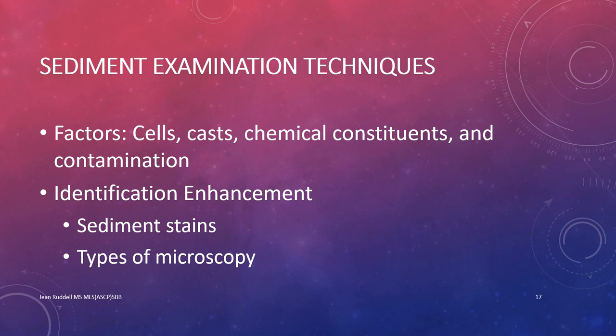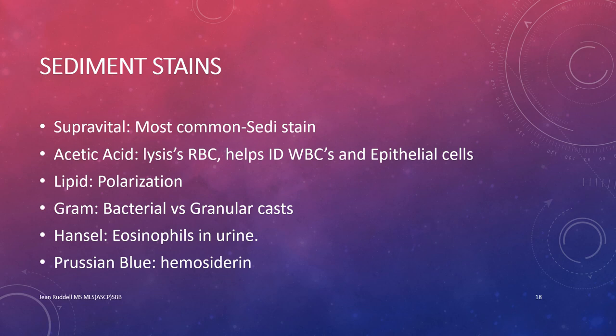There are many factors that may influence the appearance of urinary sediment, including cells and casts in various stages of development and degeneration, distortion of cells and crystals by chemical constituents, the presence of inclusions in cells and casts, and contamination by artifacts. Identification can be difficult even for experienced laboratory personnel. Identification of sediment can be enhanced through sediment staining and different types of microscopy. By staining the sediment, we can increase overall visibility of sediment elements while using brightfield microscopy, as the stain helps by changing their refractive index.